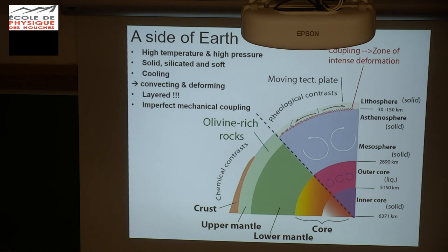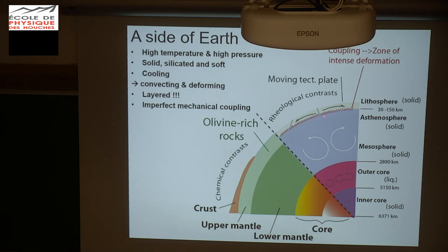Below, at the center, we have the outer core, which is liquid and convecting as well, and the inner core, which is solid and not convecting. You can notice there is not a very good match between the chemical layers and the mechanical layers. Our very important olivine, composing the pale green layer, is the mineral composing this very important interface where there is a partial mechanical coupling between the plate tectonics moving and producing earthquakes at their boundaries, and the convecting asthenosphere.